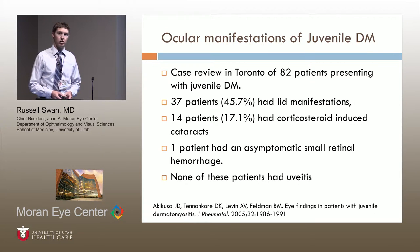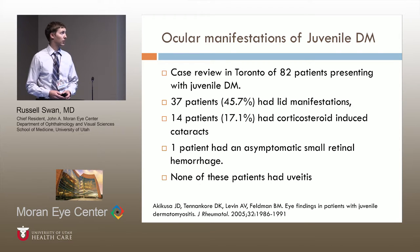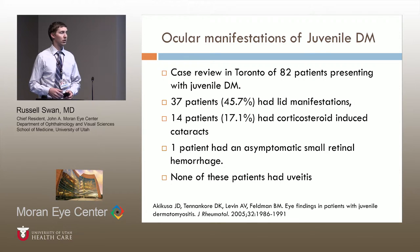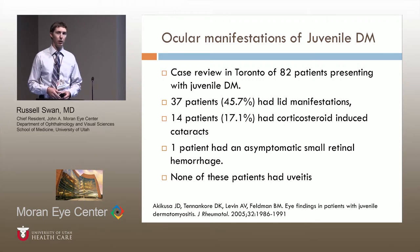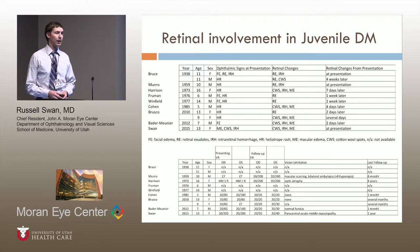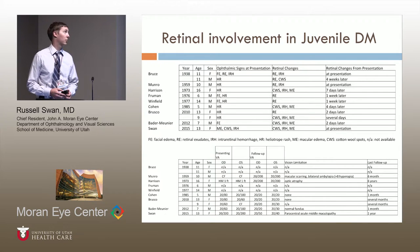The largest screening study looking at ocular manifestations of juvenile dermatomyositis was a case review in Toronto of 82 patients. Of those patients, approximately 45 to 50 percent had lid manifestations including the classic heliotrope rash. Seventeen percent eventually developed corticosteroid-induced cataracts. One patient had an asymptomatic small retinal hemorrhage, and none of the patients had any evidence of uveitis or inflammation inside the eye. There are very few case reports of retinal involvement in JDM.